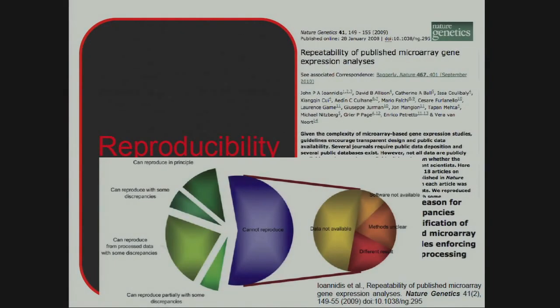Looking at the reasons why it was not reproducible: the data wasn't available, the software wasn't available, or the methods — the description of what was done and how the data was produced — were unclear. And in some cases, even if the information was present, they could not get the same results. This is a really important example of how, when you make data available, the description needs to be rich enough that you can reuse the data — meaning reproduce it and use it for other purposes.